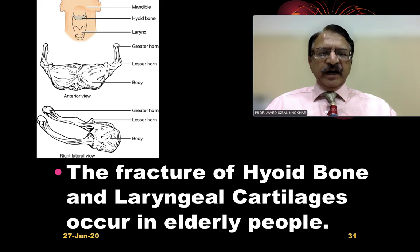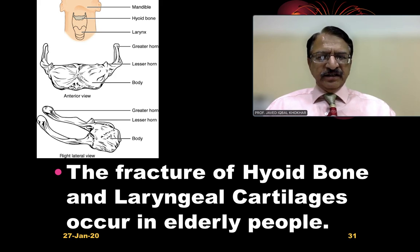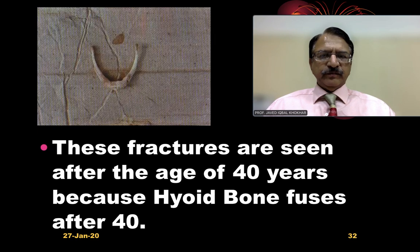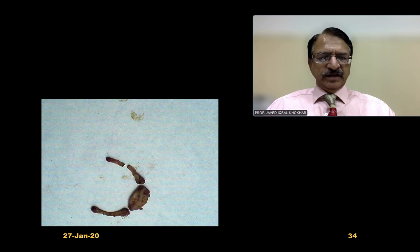Fractures of the hyoid bone and the laryngeal cartilage occur in elderly people because these are cartilaginous structures that ossify after the age of 40. These fractures are therefore seen after the age of 40, because the hyoid bone fuses after 40.